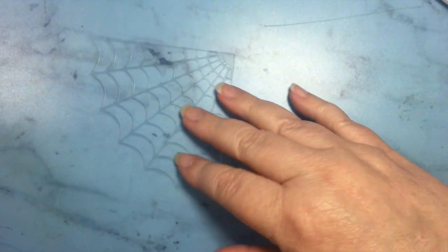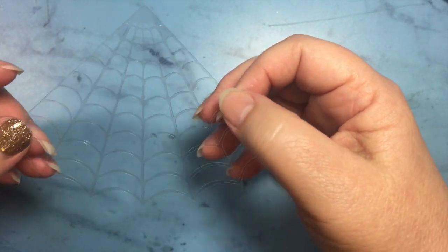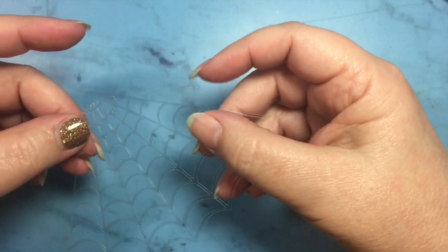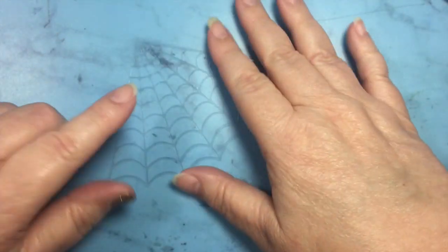Now the fun part is that I also cut out this spider web, and it's kind of hard to see because I've cut it out of overhead projecting film and it's very flimsy, very lightweight.